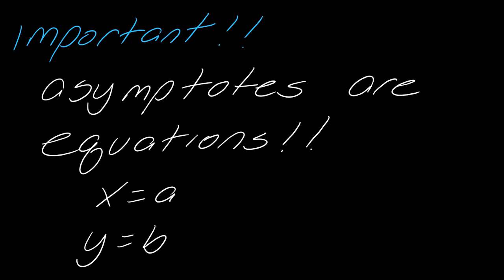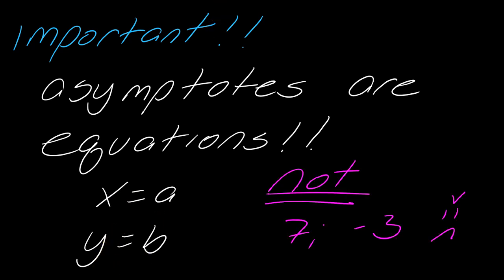An asymptote is a line, and a line has an equation. So it has to be x equals A or y equals B. You can't just say the asymptote is seven, or the asymptote is negative three — you can't just state a number. It has to have an 'x equals' or a 'y equals.' It seems like a minor thing, but it really does mean something.